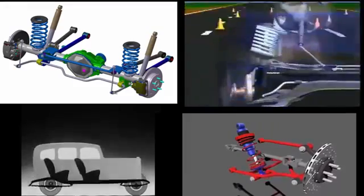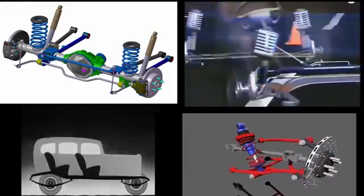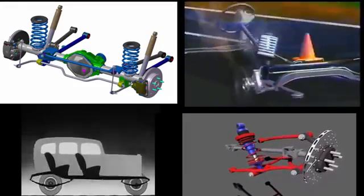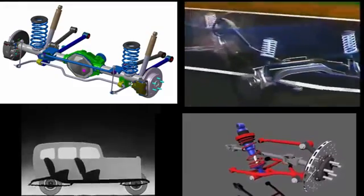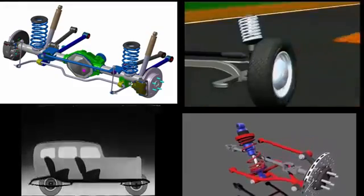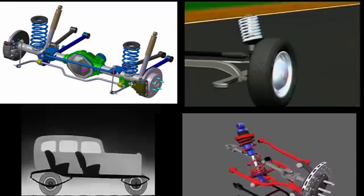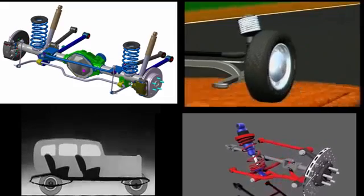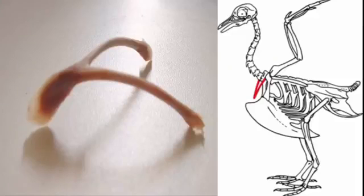Engineers have tried many designs — from wide springs and flexible bars to hydraulic springs — but nothing was better than the natural design of a wishbone suspension system.